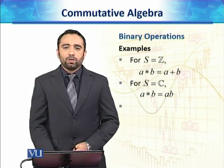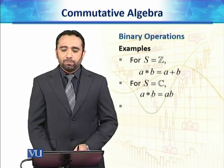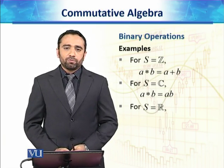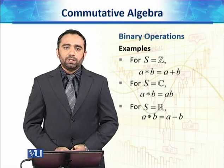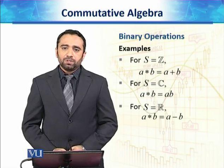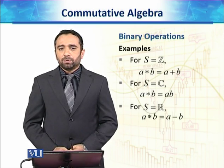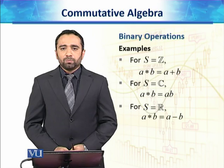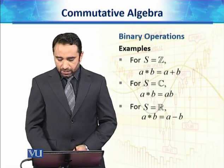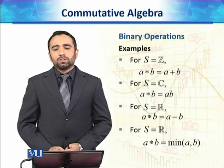For the set of real numbers, let's say a star b is equal to a minus b. These are simple examples. We can have any kind of binary operation between these elements.